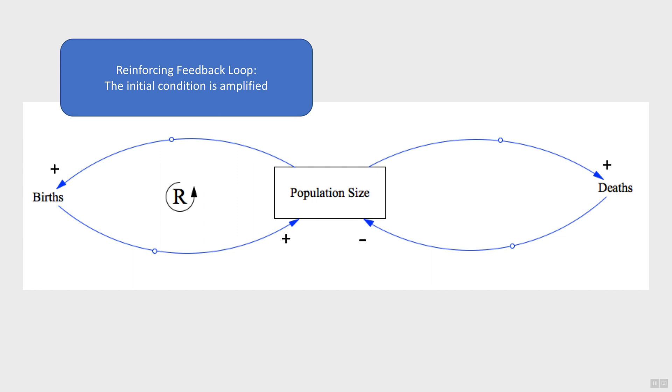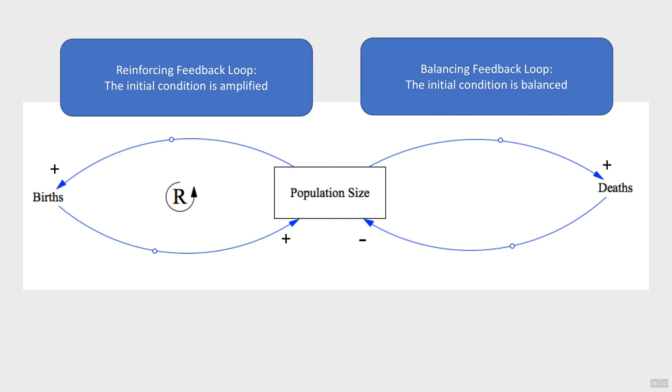We put an R to denote a reinforcing feedback loop. If the loop balances a starting variable, then it's called a balancing feedback loop, and we put a B in the middle. In this example, the birth loop increases population size, so it's a reinforcing loop, whereas the death balances the population size, making it a balancing feedback loop.